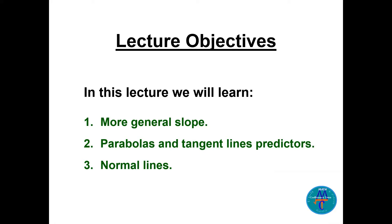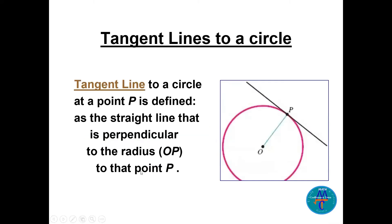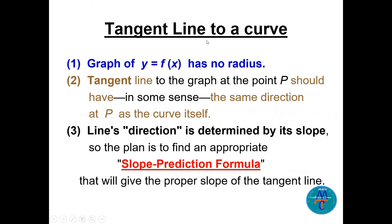We know the tangent line to a circle is defined as a line at point P perpendicular to the radius OP, so there is a 90-degree angle there. But what will happen to a tangent line to a curve if it is not a circle? The graph of the function y = f(x) has no radius, but we need to draw a tangent line to the graph at point P, so it should be in some sense the same direction at P as the curve itself.